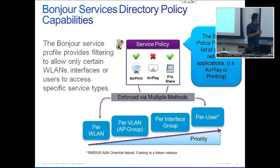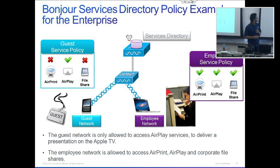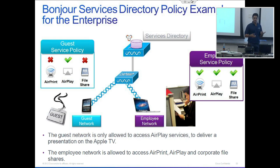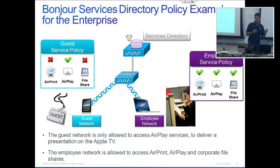If you have the WLAN override feature, you can have the teachers on a different subnet and the students on a different one — that way students don't have access to the Apple TV, but teachers do. For enterprise, if you want employees to have access to AirPrint, AirPlay, and file share — easy access to get and put files on the server — but you don't want that for guests, you just want them to display or give a presentation, you can do that with the WLAN override feature.